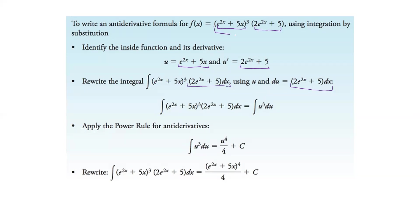We've converted this whole thing into just u cubed du. Can we take that antiderivative? Sure — it's u to the fourth over 4 plus c. Now we have to back-substitute. What was u? U was e to the 2x plus 5x. So we go back in and get (e to the 2x plus 5x) to the fourth, all over 4, plus c. This is just the general antiderivative, so it's plus c. We made something complex into something simple, took the antiderivative, then back-substituted.